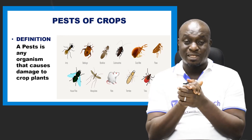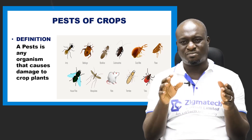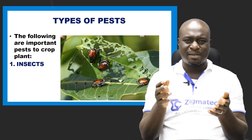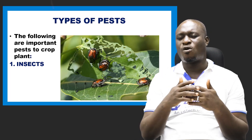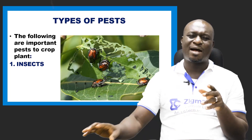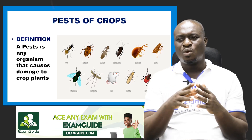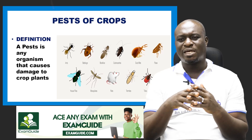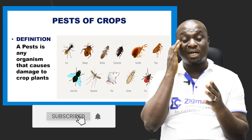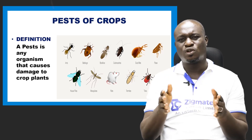A pest is any organism that can cause damage to crops or to plants. We have a whole lot of them. Looking at some of the types of pests: number one includes insects. Insects are in fact the major examples of types of pests. We have so many examples — ants, beetles, ladybugs, cockroaches, fleas, mosquitoes, termites, grasshoppers, locusts, and even the larva of butterfly. All of these insects are referred to as insect pests.